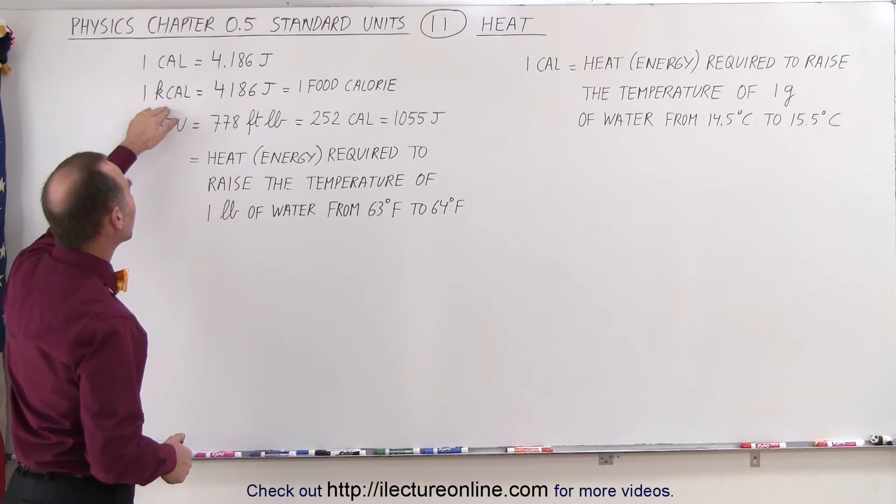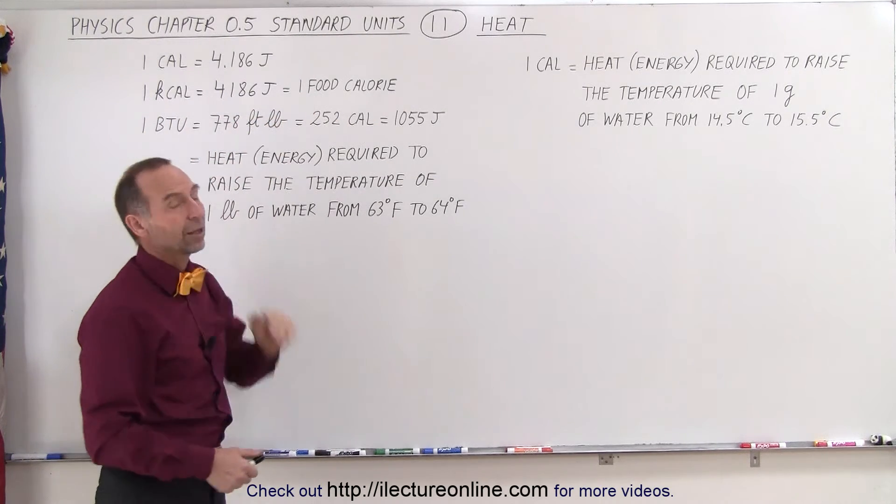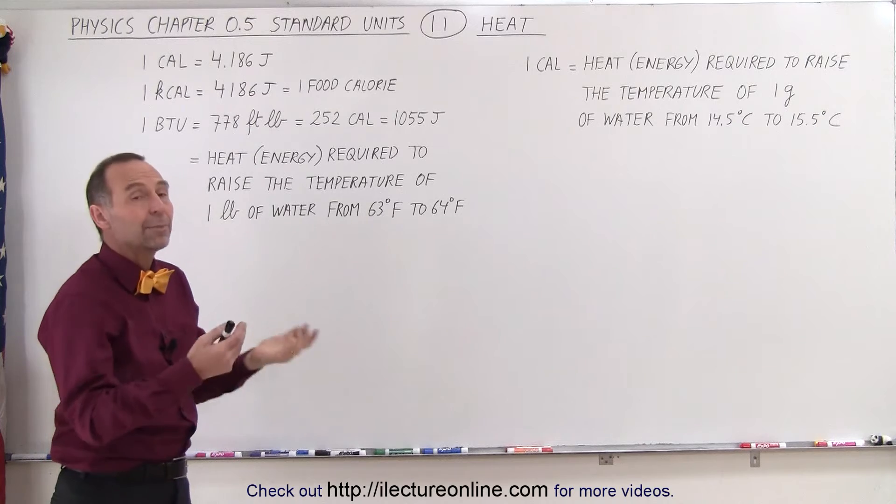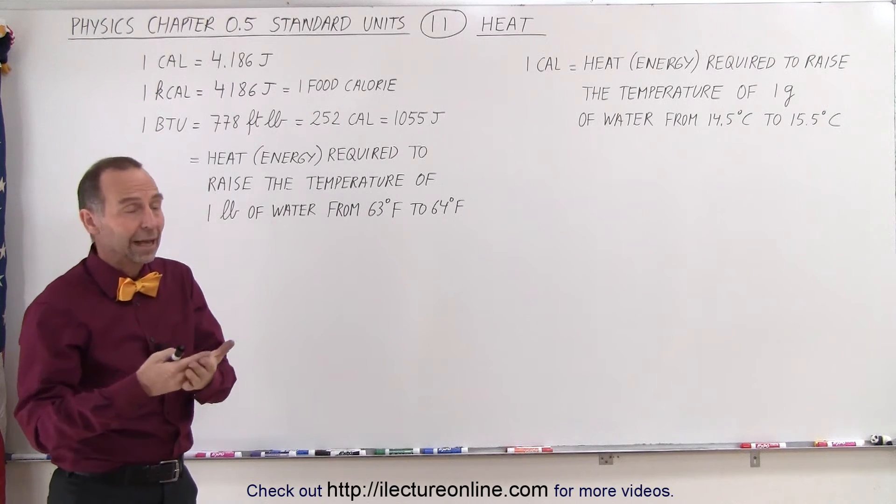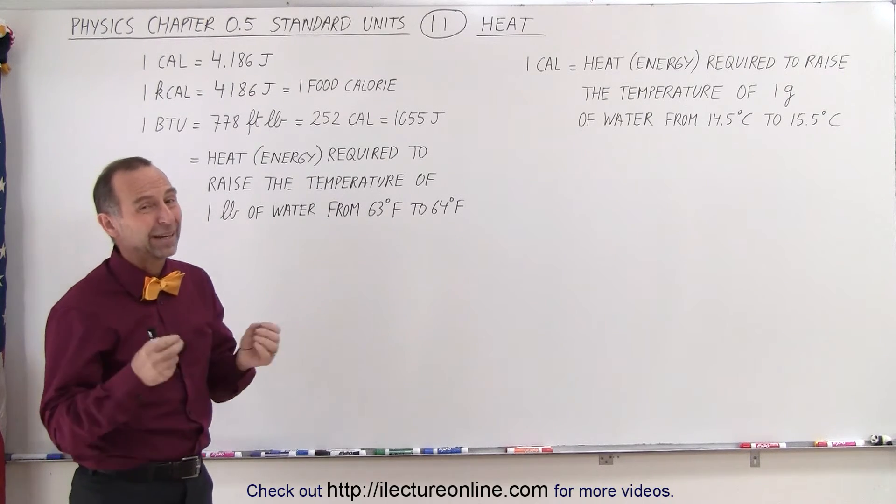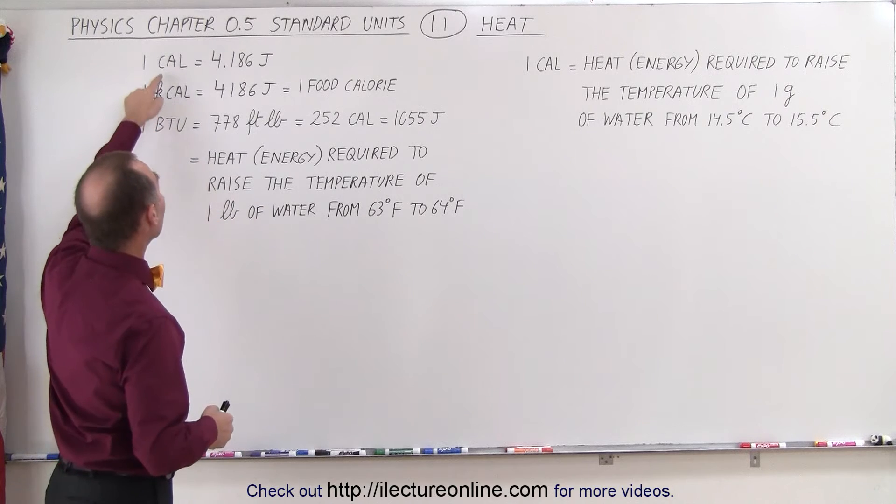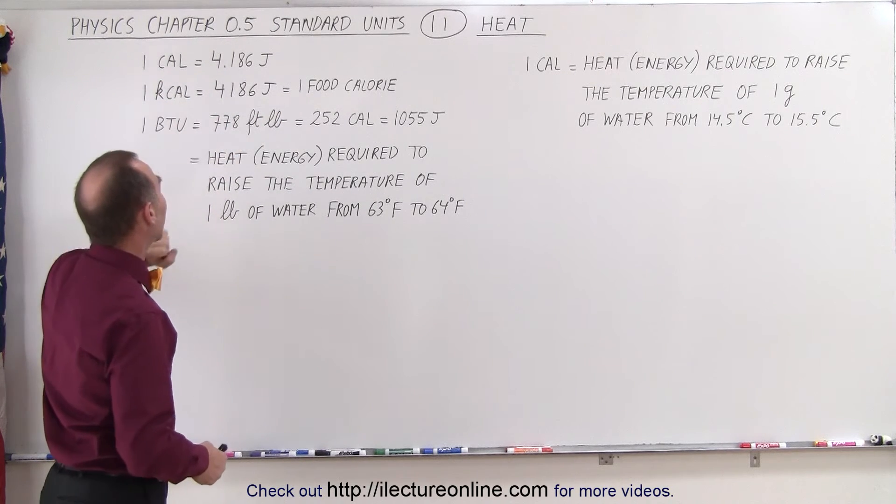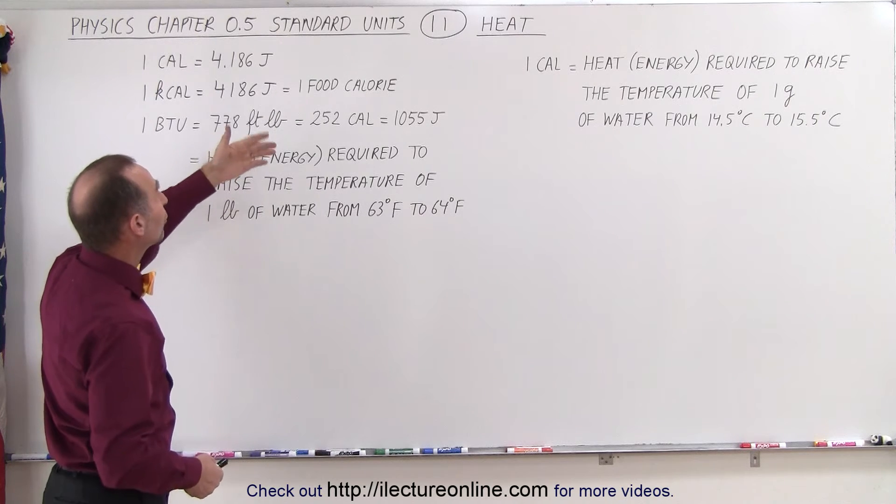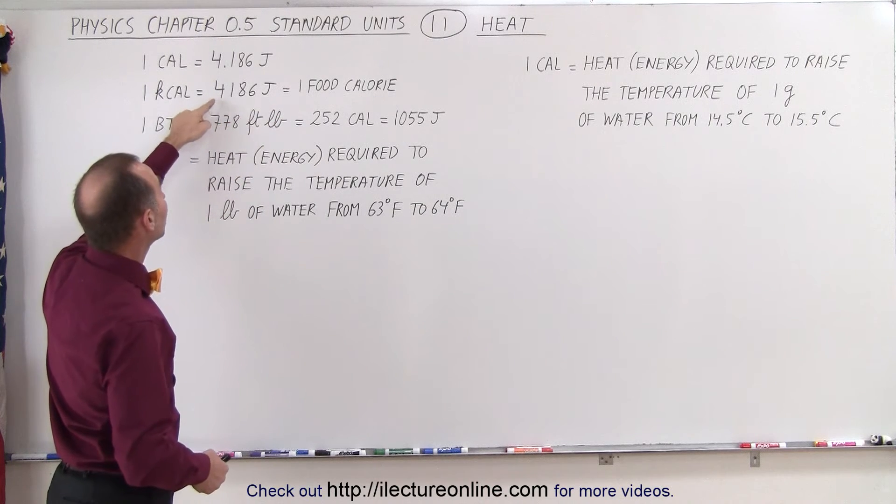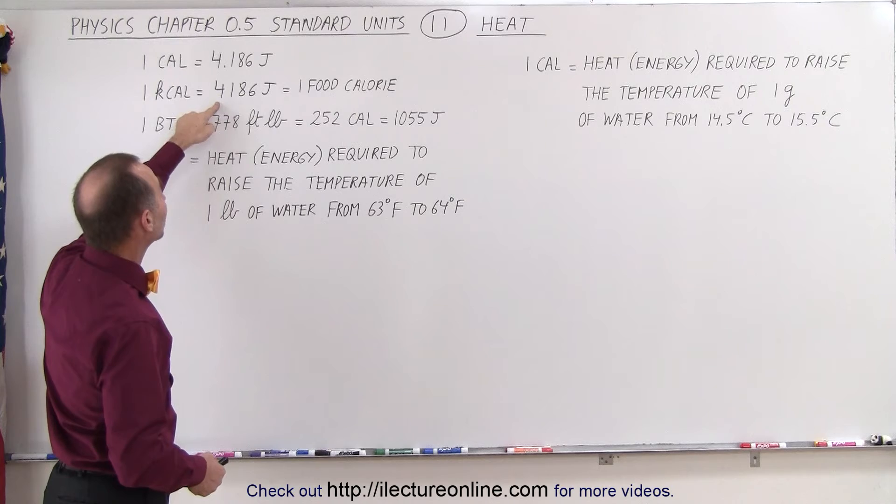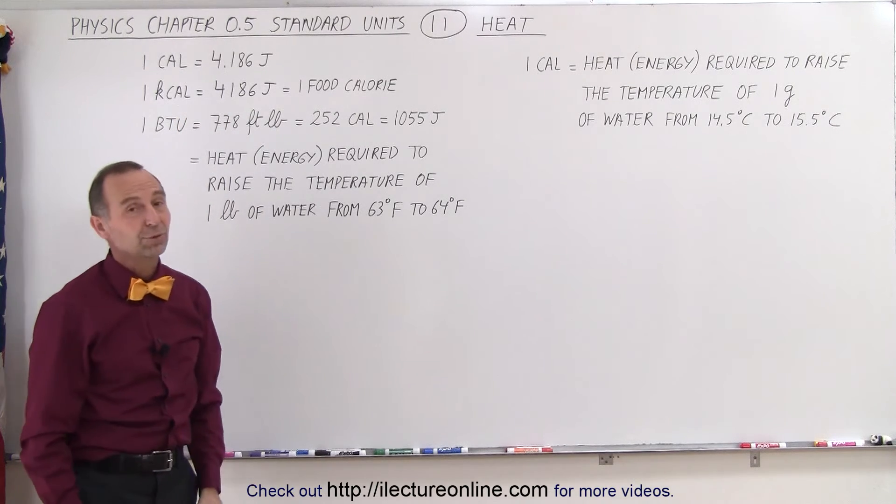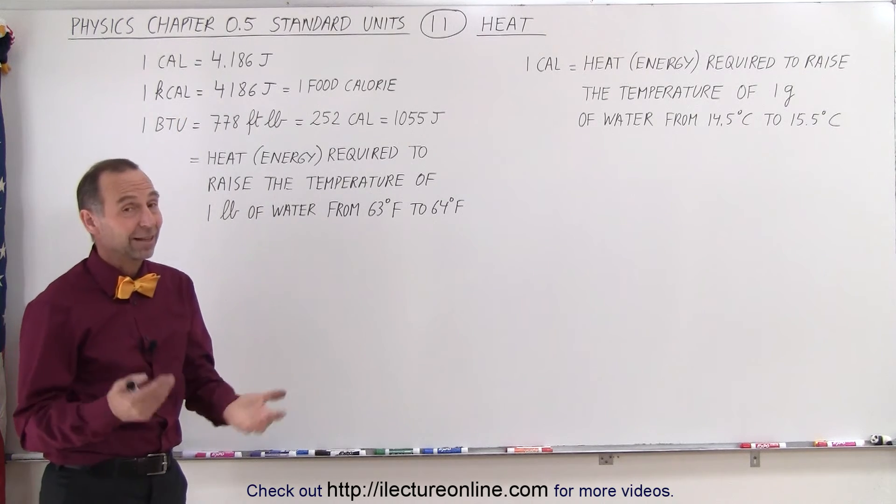A kilocalorie is what we call a food calorie. If you eat a candy bar and they tell you it has 200 calories, they're actually saying it has 200 kilocalories or 200,000 calories, because a food calorie is actually 1,000 calories. So 200 food calories would be 200 times 4,186 joules.